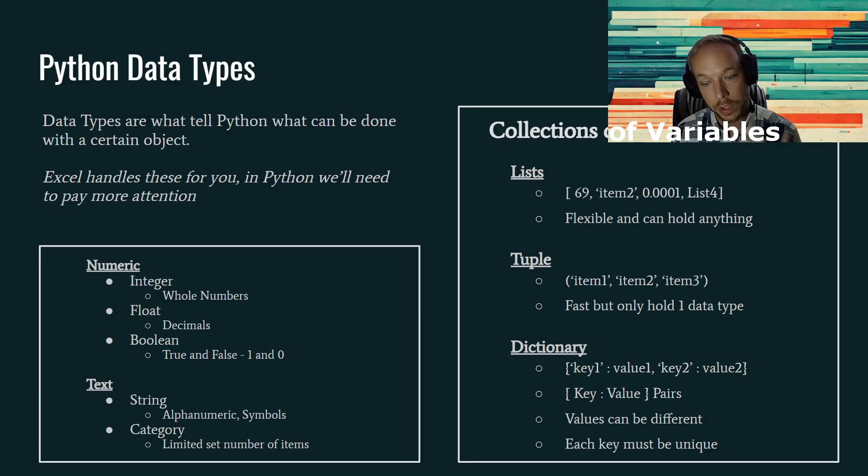So tuple is used a lot in computer science because it is faster. The downside of a tuple is it can only hold one data type. So here we just have item one, item two, item three, those are strings. And this is denoted by the parentheses, the circular brackets around the outside.